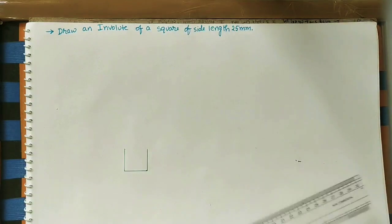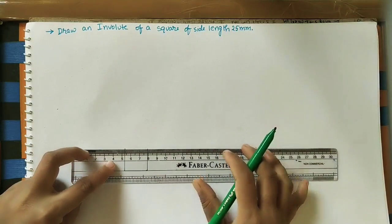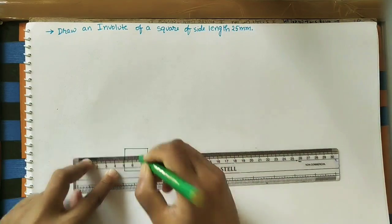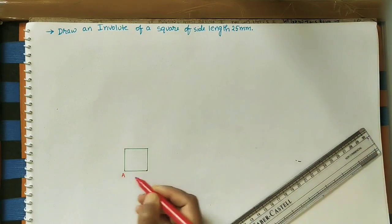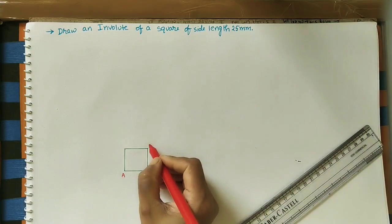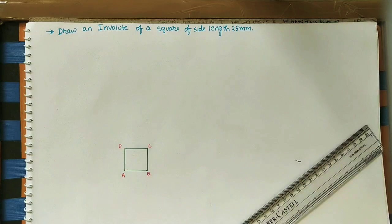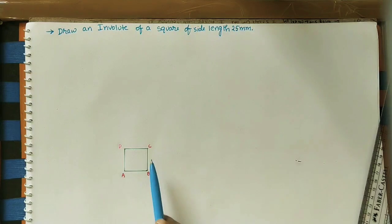Now join these two ends. This is the square. Label it A, B, C, and D.